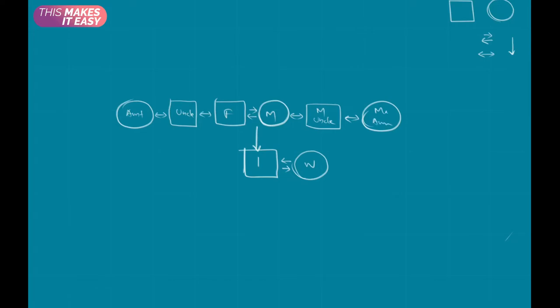The brothers and sisters of my father will be married with someone of the other gender. So my aunt will be married with a male person — he will again be my uncle. My uncle will be married with a lady — she will be my aunt. Similarly, my maternal uncle will be married with a lady who will be my aunt, and that aunt will be married with a man who will be my uncle.